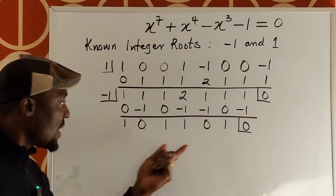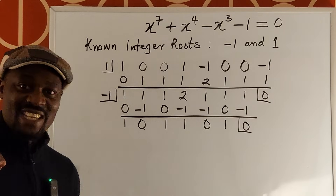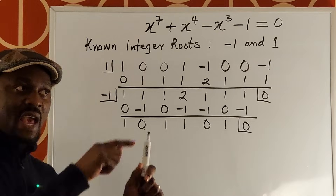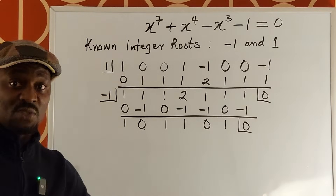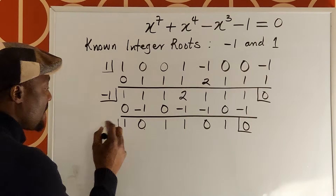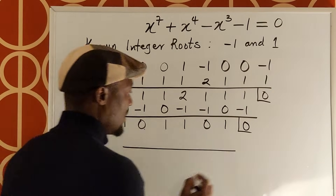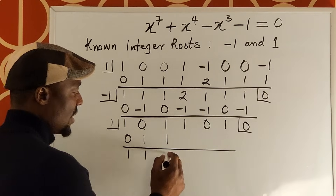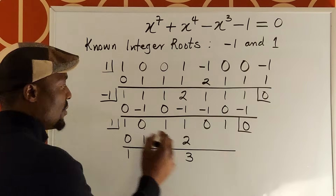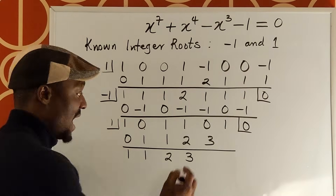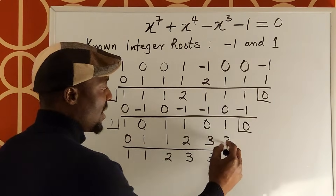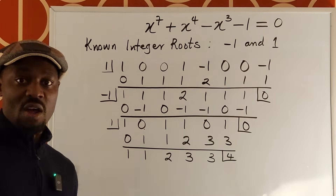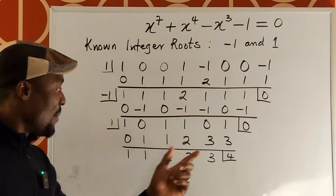Now we test whether these roots have multiplicity greater than one. Let's try dividing by one again. Going through the division, the numbers grow: one, one, two, three, three, three — and the remainder is four, not zero. So one only occurs once; its multiplicity is one.